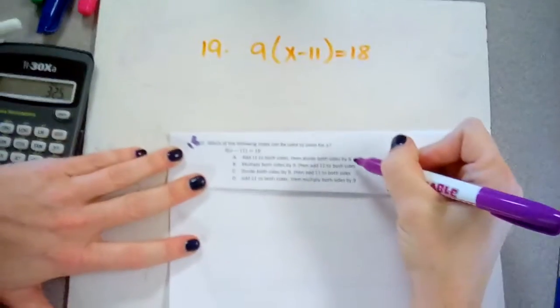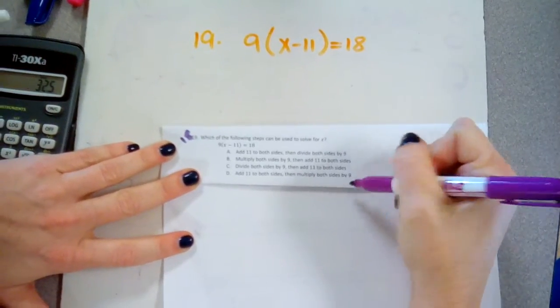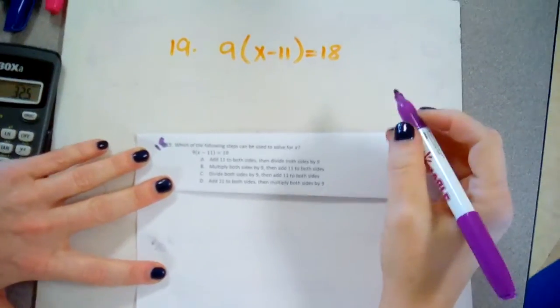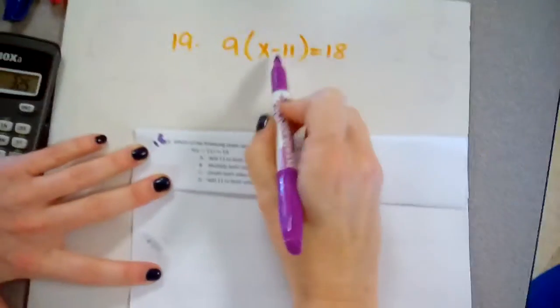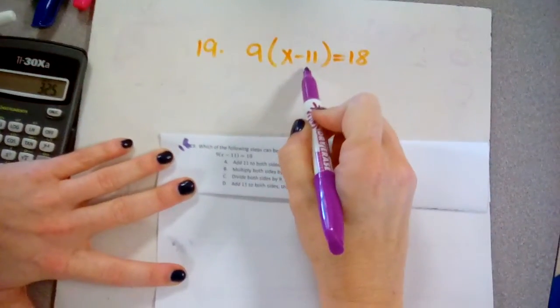So the easiest way to do something like this is to go down and eliminate the things that won't work. So I'm going to start with adding 11 to both sides. Can I add 11 to both sides?